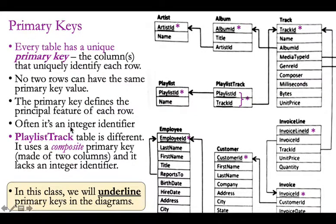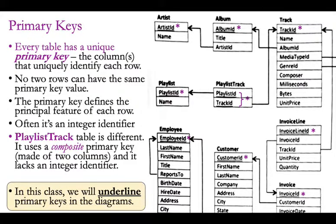Primary keys are often integer identifiers — numbers assigned specifically for disambiguating and uniquely identifying rows. Employee ID, playlist ID, customer ID — all those were added just to allow us to refer to rows in an efficient and unambiguous way.